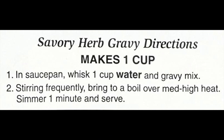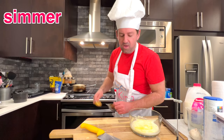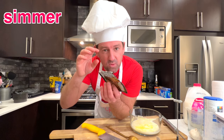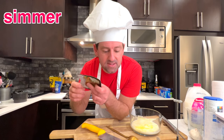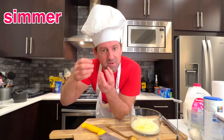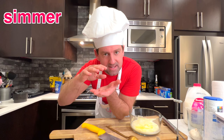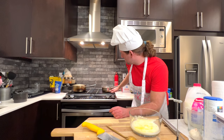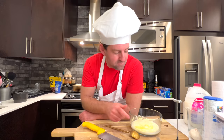The second step says: stirring frequently, boil over medium heat, and simmer one minute. We need to let it simmer. 'To simmer' means to bring it down from the boil — you turn down the heat to stop it from boiling and keep it hot but somewhere below the boiling point. I just turned the stove to low heat, so now it's just simmering. That's a very important word for cooking.